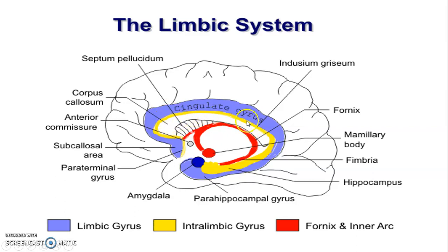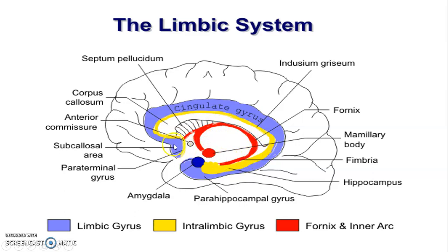This here is our indusium griseum. So we said hippocampal formation is formed by hippocampus with dentate gyrus around it and the indusium griseum. Then cingulate gyrus is usually on top of the corpus callosum. Septum pellucidum connects corpus callosum to the fornix, and the fornix has anterior columns that connect to the mammillary body of the hypothalamus. Then you have the posterior columns and the fimbria. This is the subcallosal area, that's the paraterminal gyrus, and this is the anterior commissure.